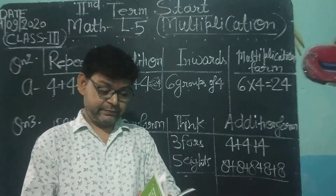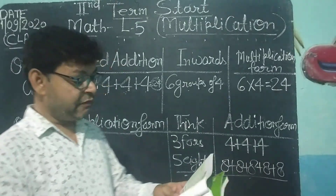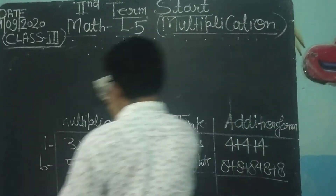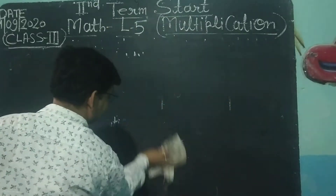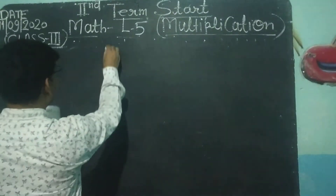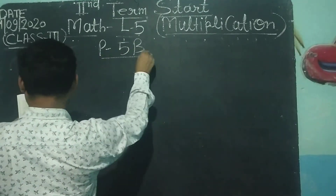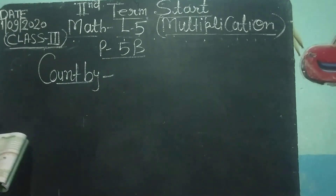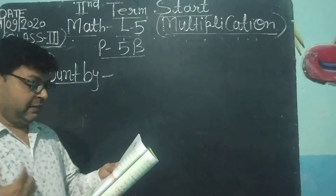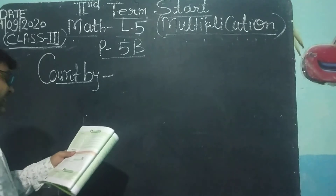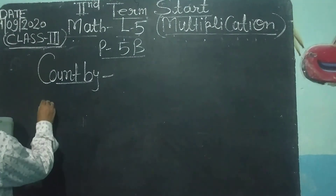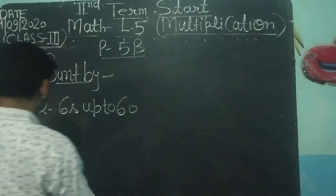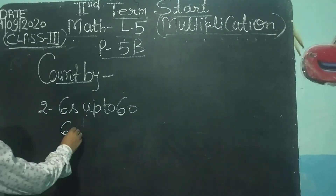अगली practice है 5B — count wide groups। यह practice बहुत ही आसान है। 5B practice — count wide, count one। इसमें आपको table से करना है। Question 1 solve किया हुआ है, force up to 40. Question 2 — 3 है: 6 up to 60. इसमें हमें 6 से शुरू करना है और 60 तक यहाँ।